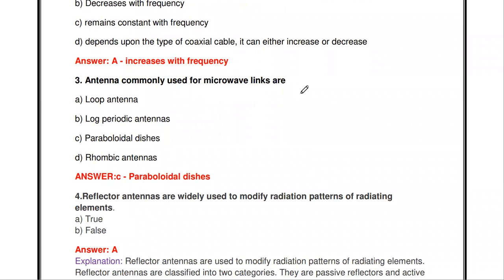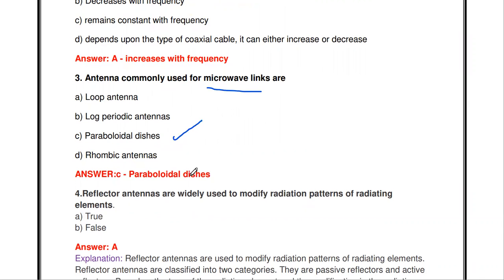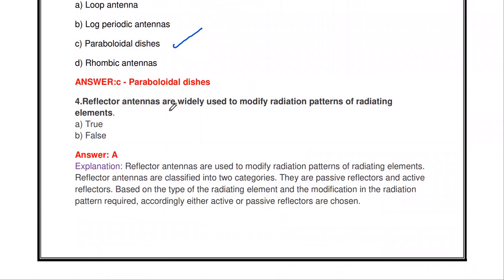The next question: the antenna commonly used for the microwave link - (a) loop antenna, (b) log periodic antenna, (c) parabolic dishes, (d) rhombic antenna. The antenna commonly used for the microwave link is parabolic dishes.